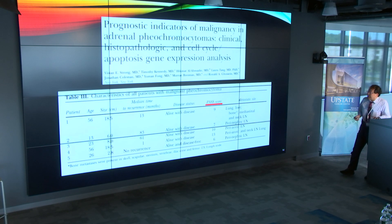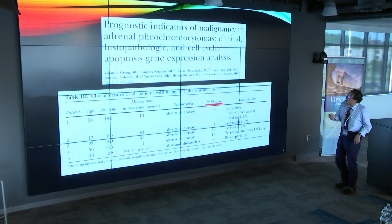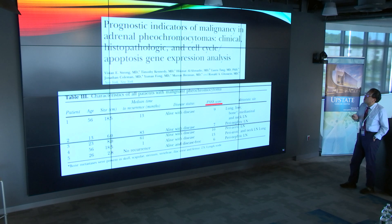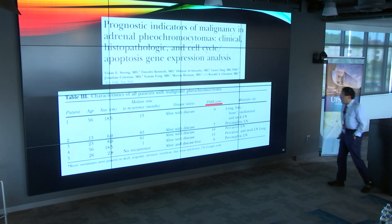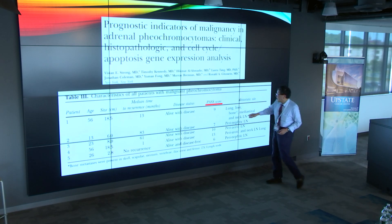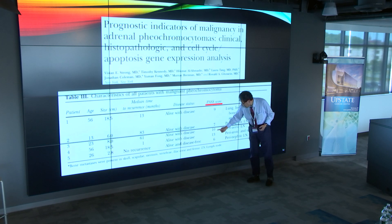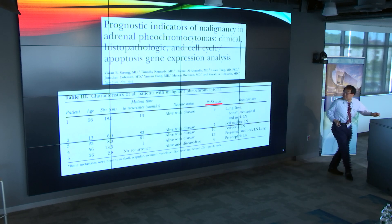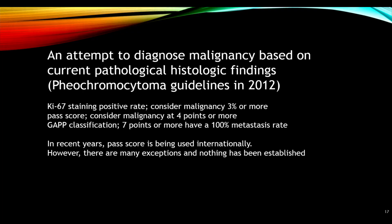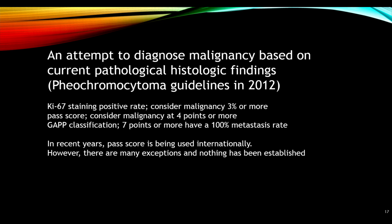From other articles on prognostic indicators of malignancy in adrenal pheochromocytomas, malignant cases have very high PASS scores — 9, 7, 10, 36 — attempting to diagnose malignancy based on current pathological and histological findings. According to the Japanese pheochromocytoma guideline of 2012, malignancy is considered at a PASS score of 4 points or more.